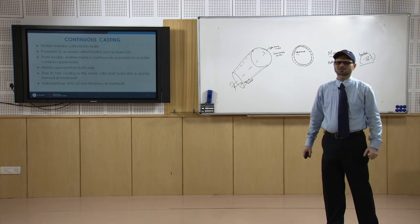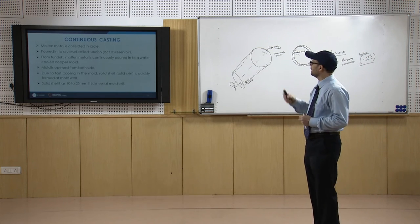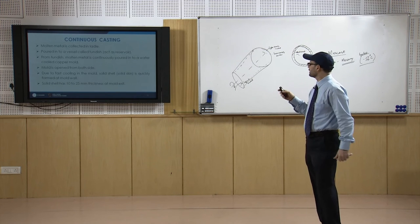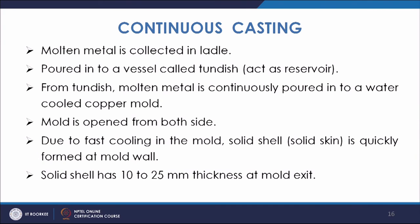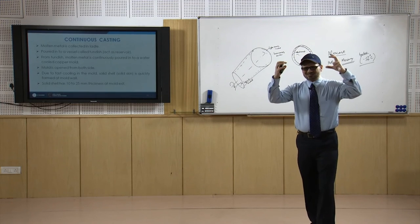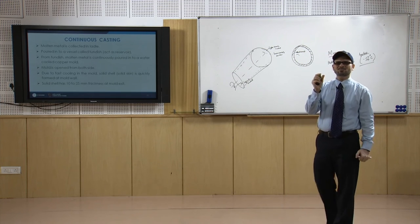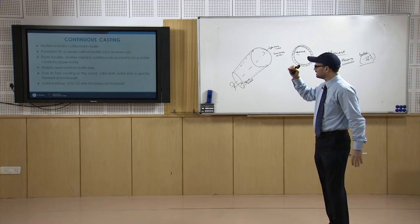The next special process is continuous casting — the latest casting process used in steel-making industries and even in non-ferrous sections — where products can be continuously cast without interruption. Metal is poured into the mould from a furnace through a ladle and then through an intermediate reservoir called a tundish. The mould is normally a water-cooled copper mould providing very good heat extraction, and as the metal enters the mould, because of the large thermal conductivity, the metal starts solidifying and a skin or shell thickness is achieved as the metal leaves the mould.